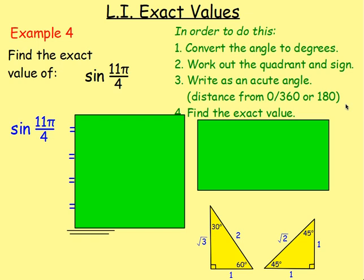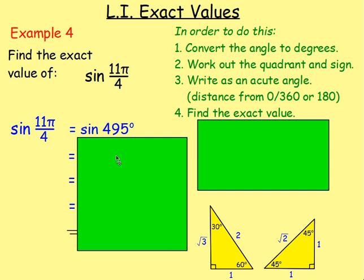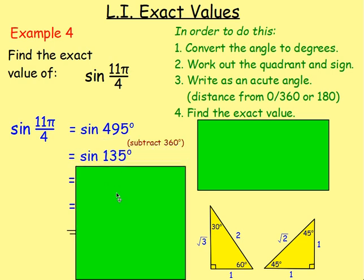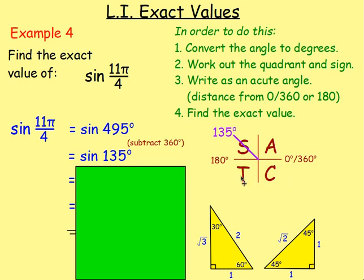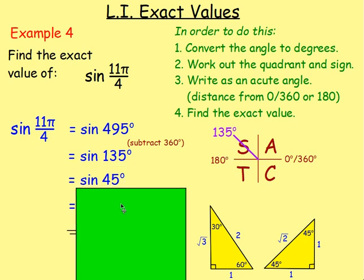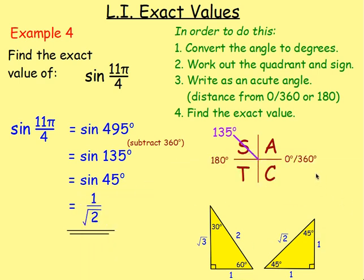Find the exact value of sine(11π/4). Convert to degrees: multiply by 180 and divide by π — you get 495 degrees. Since it's above 360, subtract 360 to get sine of 135 degrees. Using the CAST diagram, 135 is in the S quadrant and sine there is positive, so it stays positive. It's 45 degrees away from 180, giving sine 45. Using the triangle: sine of 45 is opposite over hypotenuse — 1 over root 2.